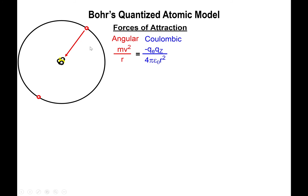Bohr looks at the interaction of the electron and the nucleus as an orbiting motion described by angular forces. The centripetal force associated with the attraction of the electron to the nucleus is given by mv²/r, from circular motion in physics. Because the electron has a negative charge and the nucleus has a positive charge, there is a Coulombic attraction between them. These two descriptions of the attraction must be equal to each other.